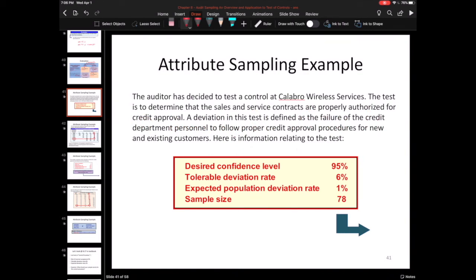The auditor has decided to test a control at Colabro Wireless Services. The test is to determine that sales and contracts are properly authorized. The desired confidence level is 95%, tolerable deviation rate 6%, expected is 1%, and sample size is 78.